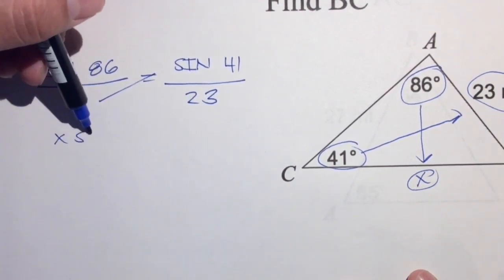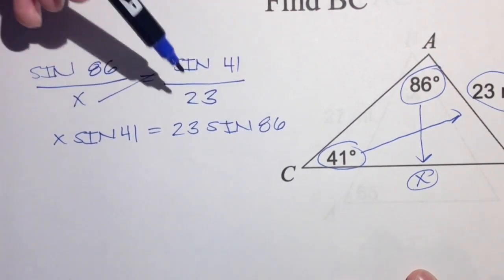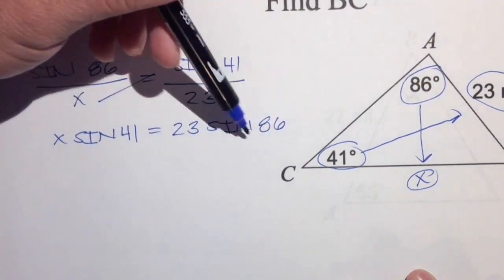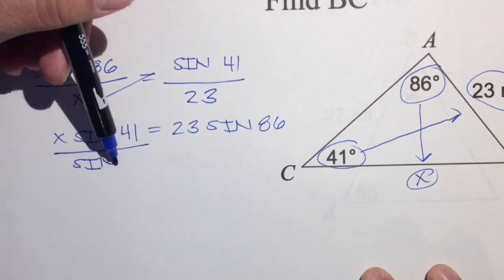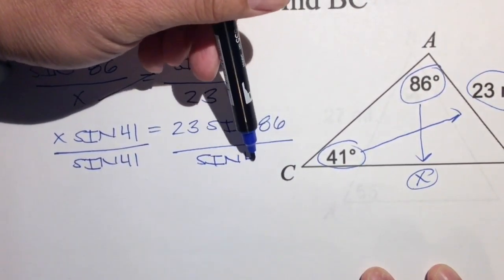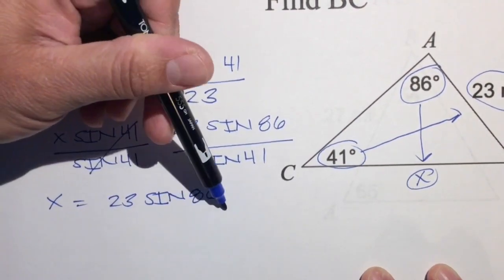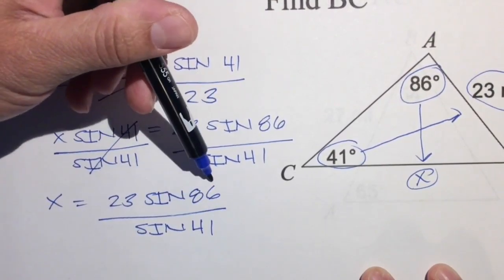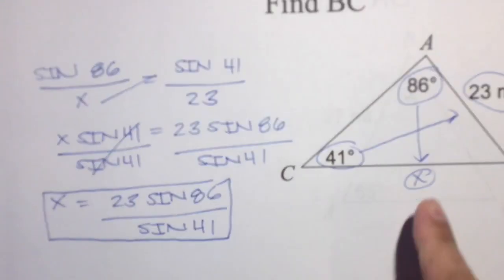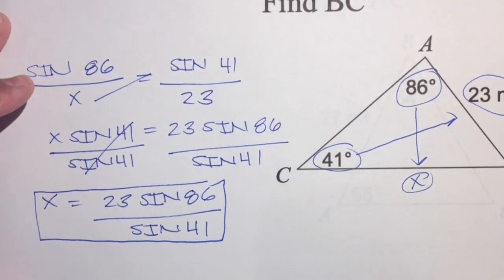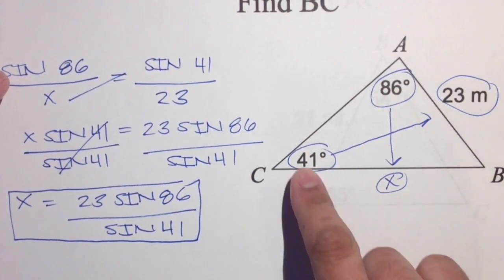From there, let's do some algebra and cross multiply: X times sine of 41 equals 23 times sine of 86. Always put the number without the sine in front — it'll make things easier when typing into the calculator. X isn't by itself, so divide both sides by sine of 41. Those cancel out: X equals 23 times sine of 86 over sine of 41. I'm predicting this will be greater than 23, because the 86-degree angle is greater than 41 degrees, so its opposite side should be greater than 23.